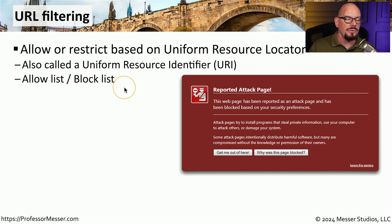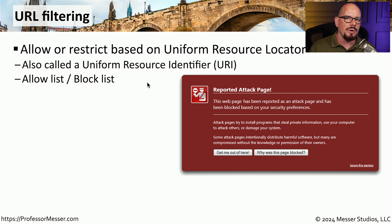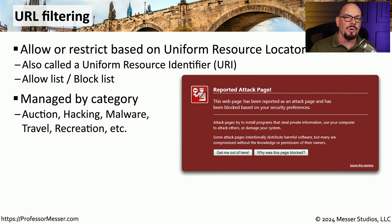There are other ways to filter traffic. One of these is through URL filtering. This allows you to specify either a specific uniform resource locator, or URL, or you can specify a category of URL — sometimes referred to as a uniform resource identifier, or URI. This is often put into an allow list or a block list for an organization. It's much easier to roll all of those URLs up into a very broad category, and that's what most URL filtering devices will do.